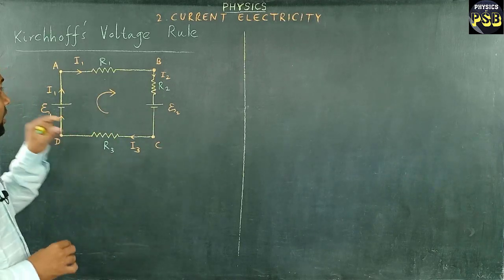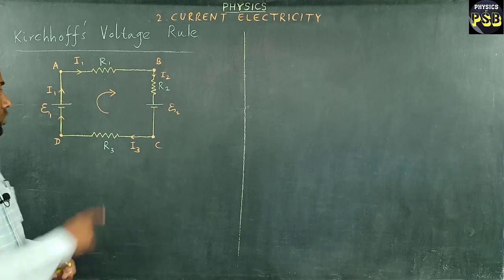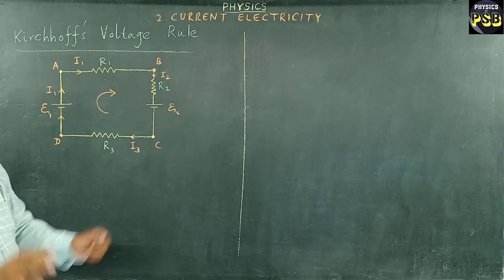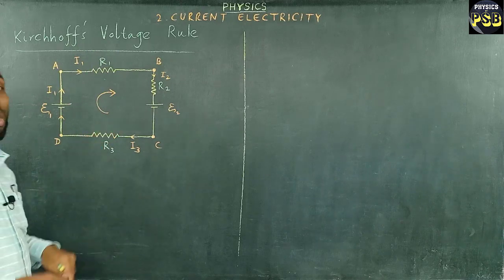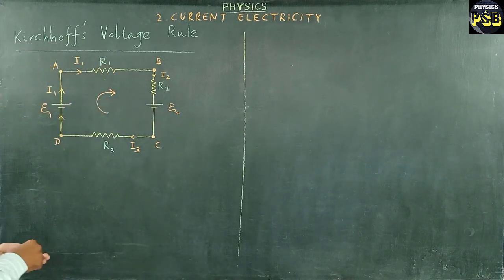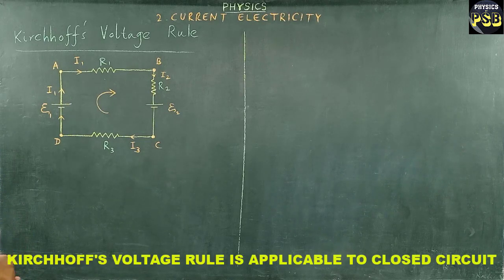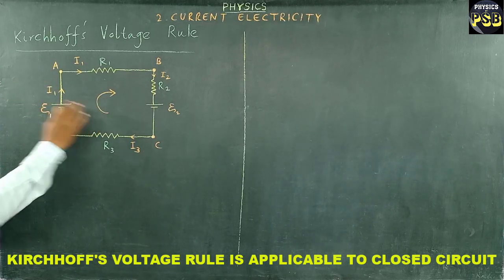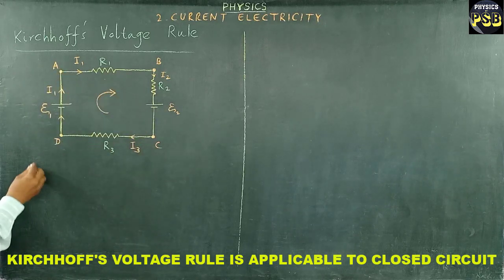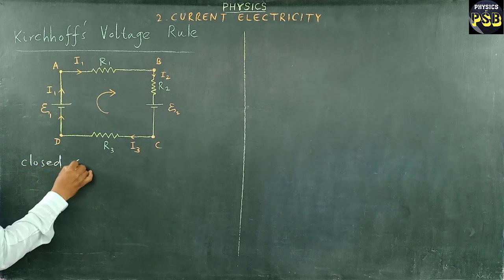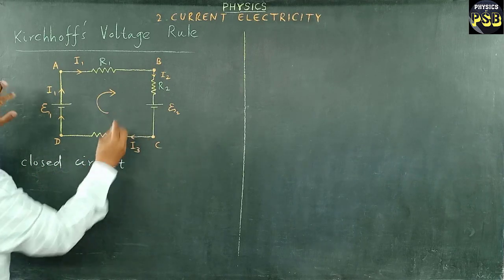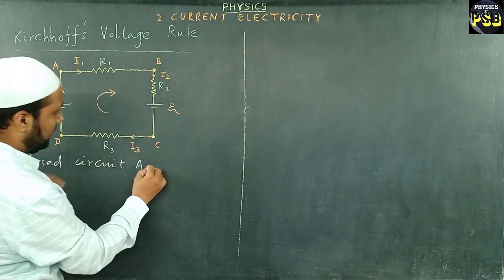What is the case? Now let me apply Kirchhoff's voltage rule to this closed circuit. You remember, we always apply Kirchhoff's voltage rule to a loop or closed circuit of this kind. Now, when I apply Kirchhoff's voltage rule to the loop, I will start from A.